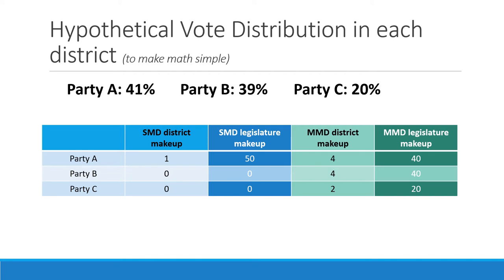Assume that in each district the vote distribution is: Party A gets 41%, Party B gets 39%, and Party C gets 20%. In a single-member district system, Party A would win each district — even though it only has a few more percentage points than the others, it has the plurality. So it would win all districts and, in this hypothetical legislature, hold all of the seats. This shows the magnification effect, where a party with only a plurality ends up with 100% of the representation.